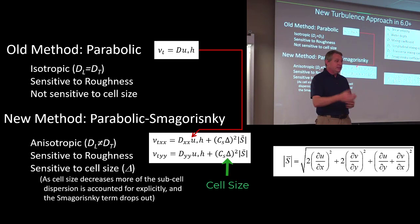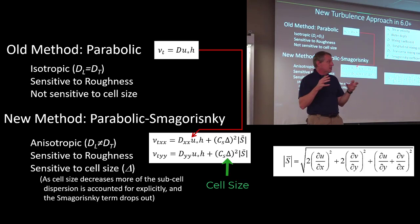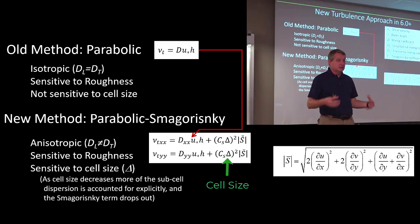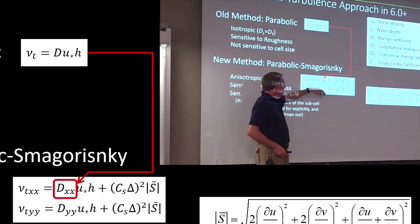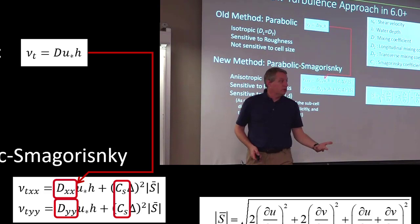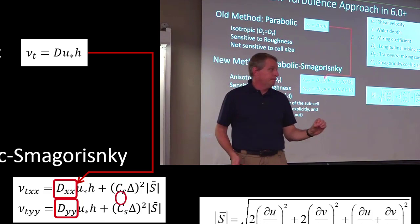And so some people are kind of against Smagorinsky because it is tied to the cell size, but that's a feature, not a bug, particularly with a subgrid model. So this is always what you'll use. You have three coefficients. You have longitudinal coefficient, a transverse coefficient, and a Smagorinsky coefficient. If you don't want to use the Smagorinsky term, if you just want to go back to the old parabolic, you just make your Smagorinsky coefficient zero. There's less numerical diffusion if you have smaller cell.